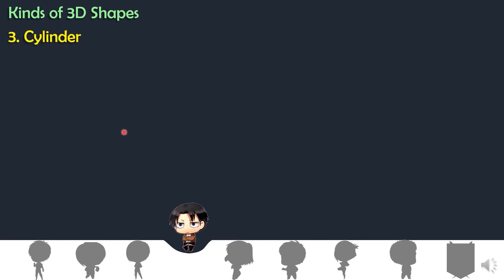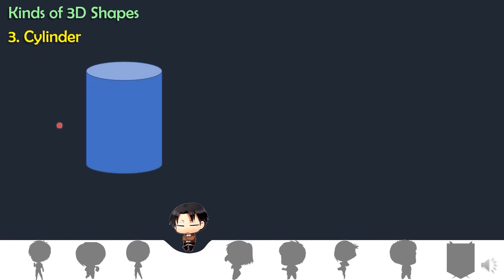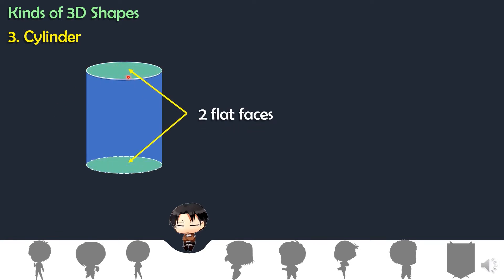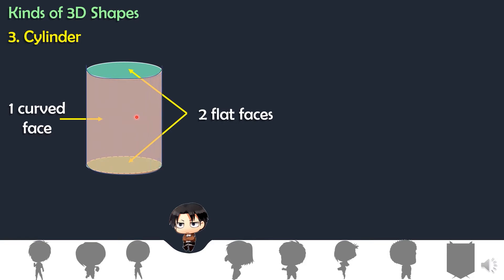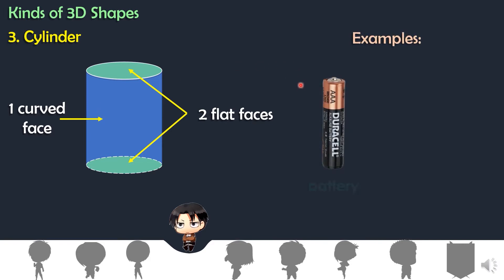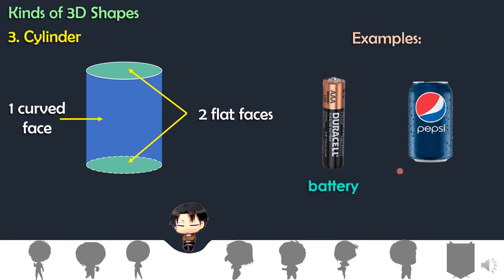Number 3, we have the cylinder. Cylinder has two flat faces and one curved face. Examples of cylinder, we have the battery and a tin can of soft drinks.